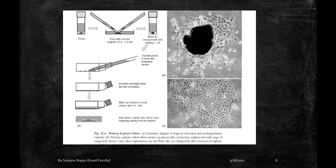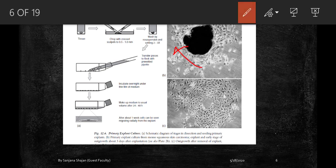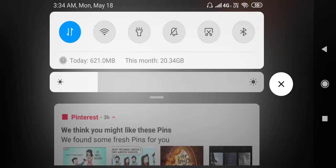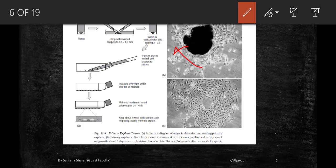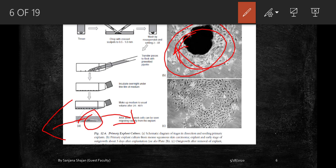For primary explant culture: take the tissue, chop it, wash and resuspend it, incubate overnight, then use medium for 24 to 48 hours so cells get nutrients to grow. After one week, the explant begins growing on both sides. This was initially used for mouse squamous skin carcinoma — the explant was placed, later removed, and new cells were allowed to grow.